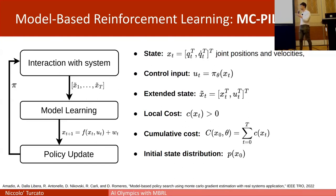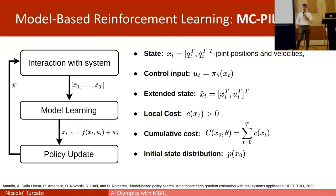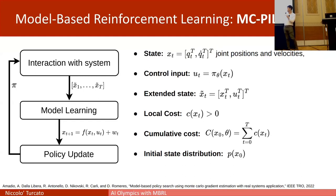The state of the system x_t is composed of the robot's joint positions and velocities. The control input u_t is completely determined by a policy function parameterized by parameters called theta. We have a local cost function that encodes the requirements of the task, and the goal of the algorithm is to minimize the cumulative cost with respect to the policy parameters, starting from an initial state distribution.